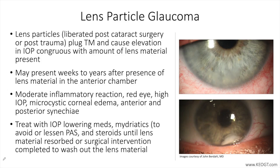Lens particle glaucoma results from liberated cataract material after the lens capsule is compromised post-cataract surgery or trauma. This is in distinction to phacolytic glaucoma, which occurs in the absence of visible openings in the lens capsule. The liberated lens material subsequently acts as a physical barrier to aqueous humor egress from the anterior chamber across the trabecular meshwork and into the distal outflow system.